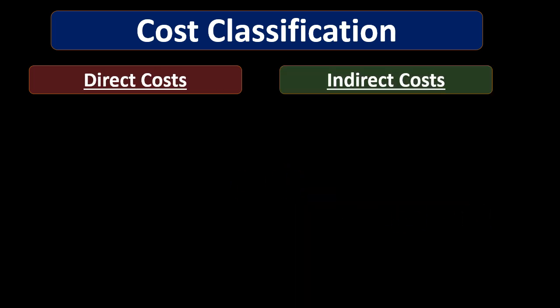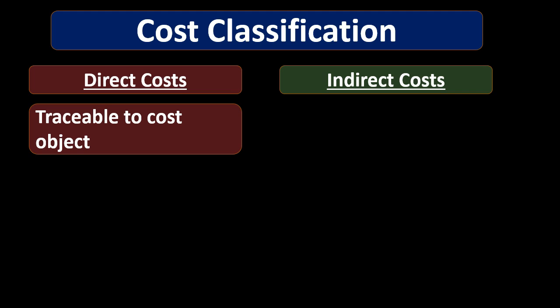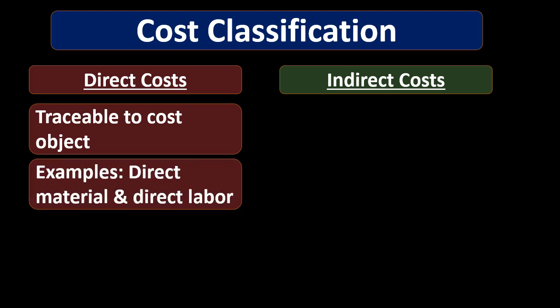Another way we can classify costs is by function — what does the cost do, why are we incurring it? We can have direct costs and indirect costs. Direct costs are traceable to a cost object; in a production cycle these would be things like direct materials and direct labor. For example, we can trace the wood in a guitar to a particular guitar we are producing and allocate that cost to it. Similarly, if someone is assembling a guitar we can allocate the labor cost to that particular piece of inventory.